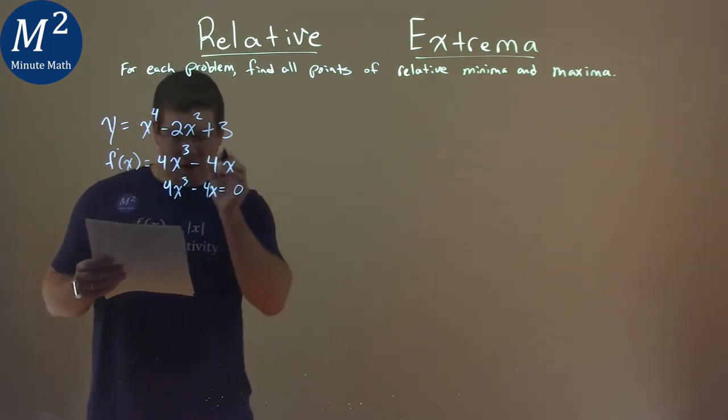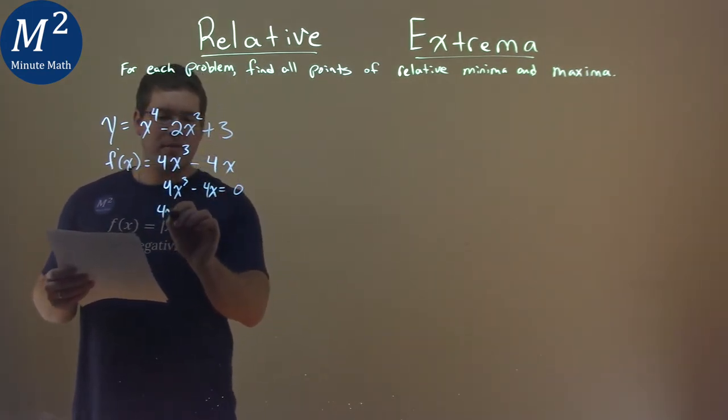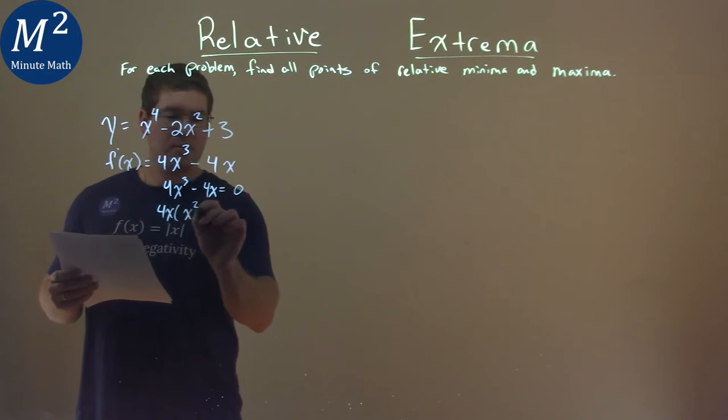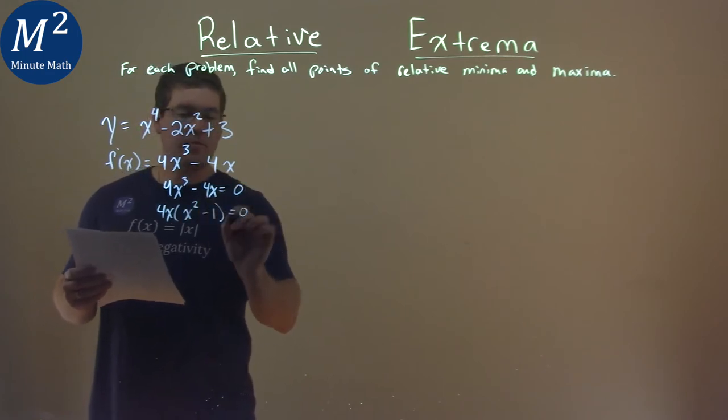4x, I almost forgot that. Let's pull out a 4x here, and we're left with an x squared minus 1 equals 0.